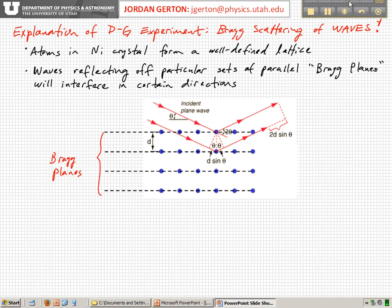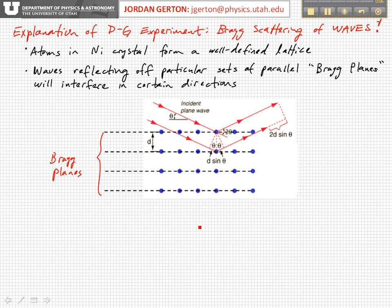We can test de Broglie's hypothesis by invoking the Bragg formalism for scattering of waves off crystals. If we get an answer which agrees with the measurements of Davisson and Germer, then we can confirm that de Broglie's hypothesis was indeed true — that electrons can be considered to have wave-like properties.